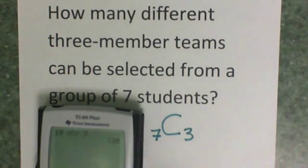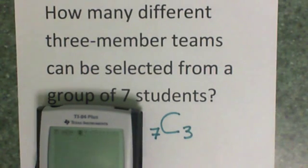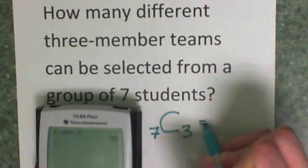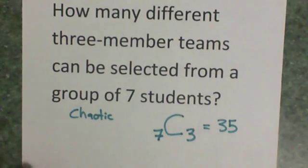So from the seven I'm going to pick teams of three. So I would go to the calculator, put in the seven, math, probability, down to NCR, and then put in the three. And there are 35 different ways that I could get a team of three from those seven students.